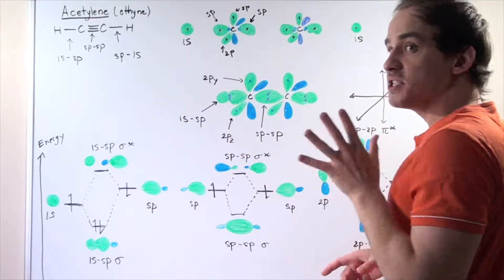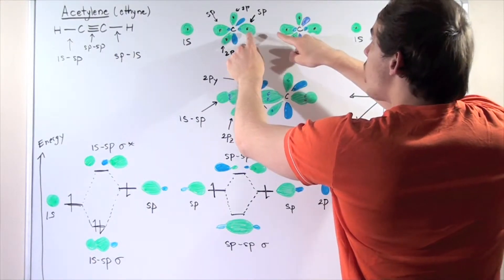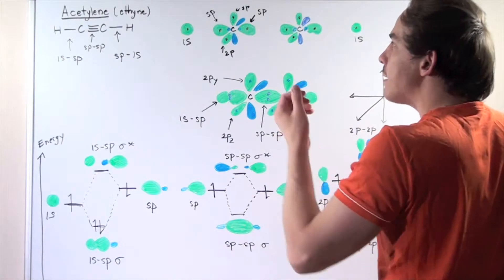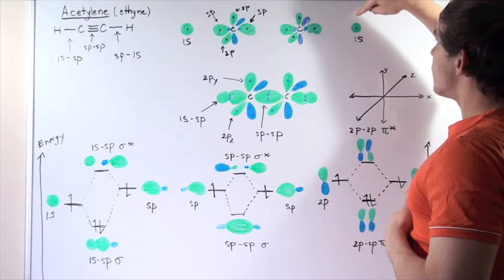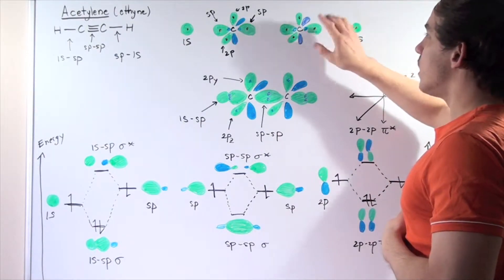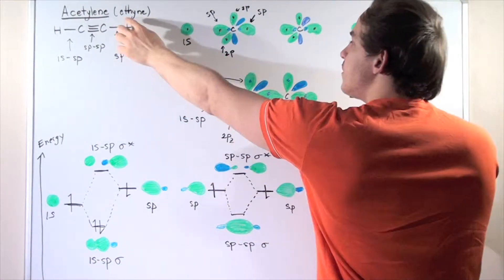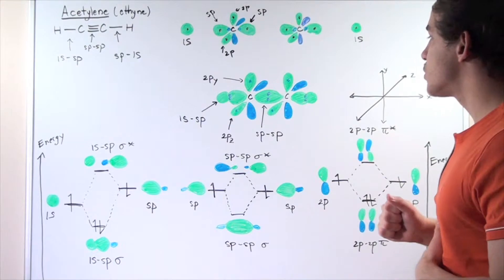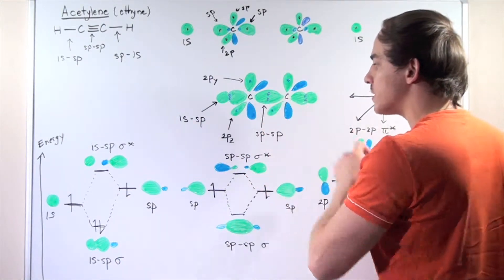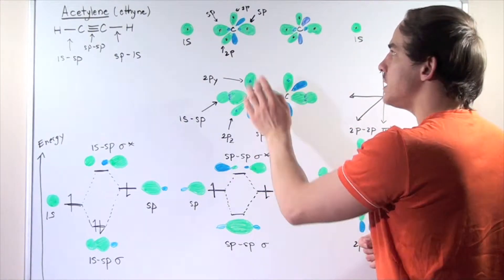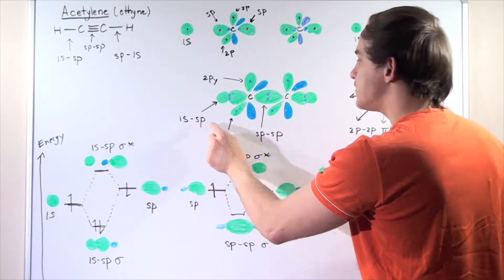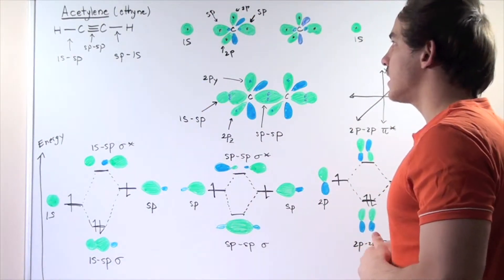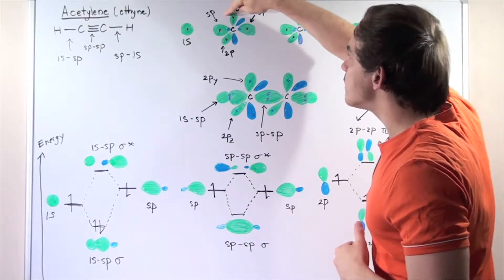These two carbons can overlap — specifically, the SP hybridized orbitals will overlap and they will each share an electron. Likewise, the 1S orbital of this H will overlap with the SP orbital of this carbon, and the 1S orbital here will interact with the SP orbital of the second carbon. We will form our ethyne compound, shown here. This is the molecular orbital diagram of our simplest alkyne. Here we have the SP-SP hybridized orbital formed from the overlap of each individual SP hybridized orbital, and here we have our 1S-SP bonds. Notice we still have these pure P orbitals.